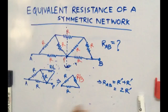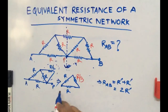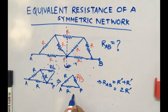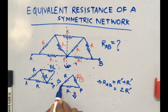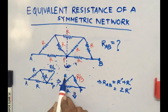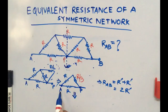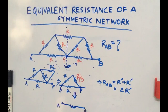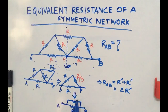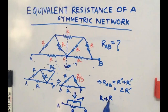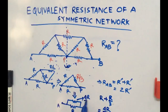Now between A and P, R and R/3 are in series. Simply adding them: R + R/3 = 4R/3. So this series combination gives us 4R/3.